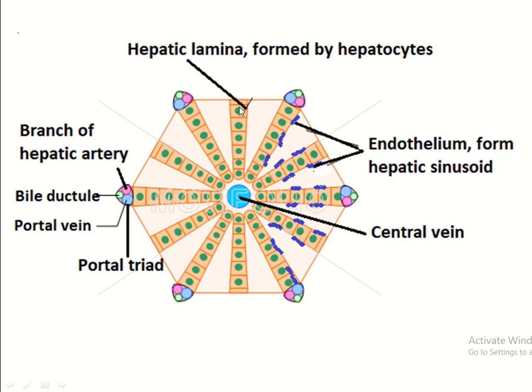Each hepatic lamina is formed by a single layer of hepatocytes. This is one hepatic lamina, another hepatic lamina, and another hepatic lamina, all radiating from the central vein.